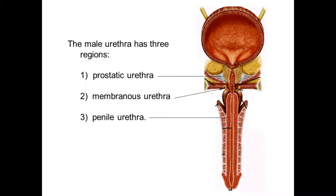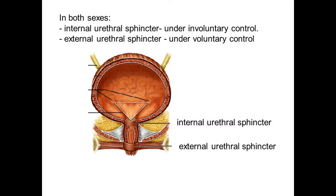The male urethra has three regions: the prostatic urethra, membranous urethra, and penile urethra. In both sexes, the internal urethral sphincter is under involuntary control, and the external urethral sphincter is under voluntary control.